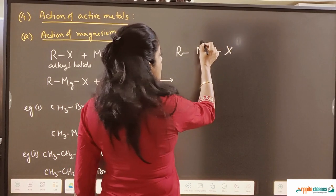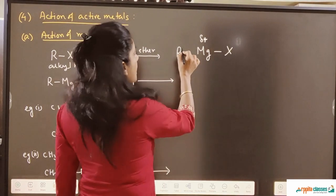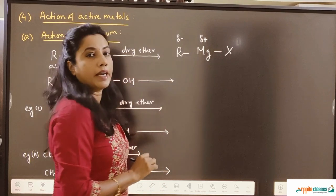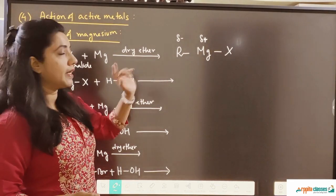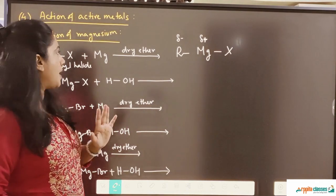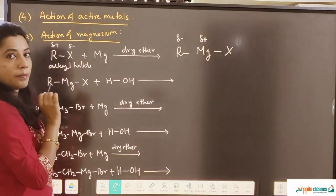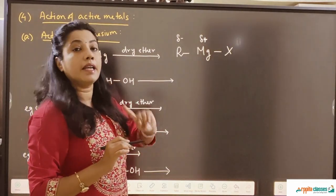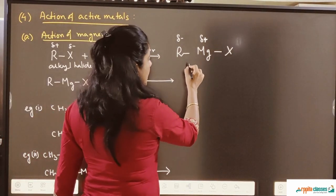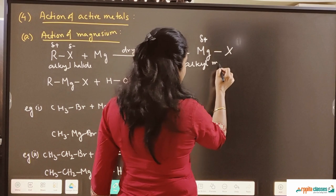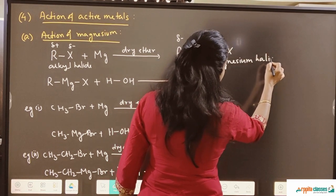Magnesium is much more electropositive than carbon. So the carbon gets a very small negative charge and magnesium gets a very small positive charge. This is basically a compound in organic chemistry where carbon gets a negative charge — in all other compounds carbon is positive. Even in alkyl halide, the halogen is electronegative so carbon gets a positive charge. This compound R-Mg-X is called alkyl magnesium halide.